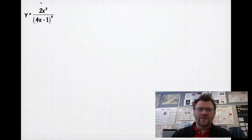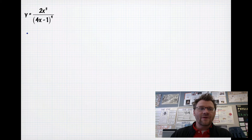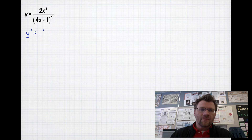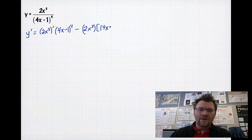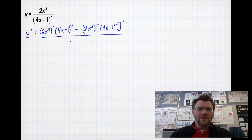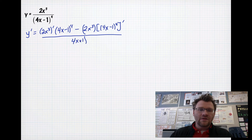For this question, we're going to find the derivative of y equals 2x cubed all over (4x minus 1) to the fourth power, using the quotient rule. To find y prime, I take the derivative of the top — put in the prime mark to show what you're differentiating — multiplied by the bottom (4x minus 1) to the fourth power, minus the top (2x cubed) multiplied by the derivative of the bottom. The denominator becomes (4x minus 1) to the eighth power.